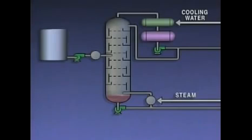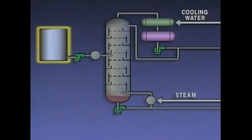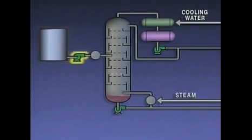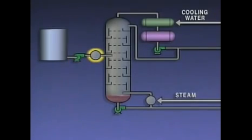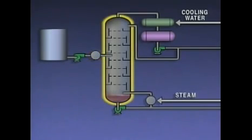Let's take a look at a simplified representation of a distillation system. In this example, the feed is stored in a tank. During operation, a pump is used to move the feed from the tank to a preheater. In the preheater, the mixture is heated under pressure to just below its boiling point. The pressure in the tower is lower than the pressure in the preheater, so when the feed enters the tower, it starts to boil.